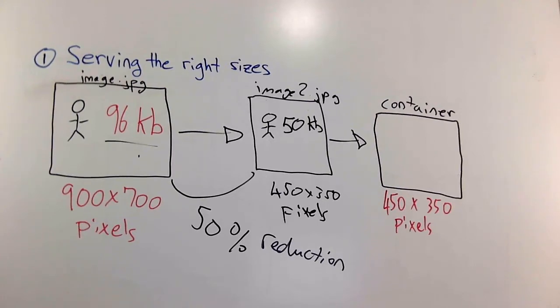Which kind of brings us to the next point, point number two, which is to have CDNs serve your image. And that's where the bandwidth reduction in cost can really come in, since most services charge you by bandwidth. So let's take a look at that.